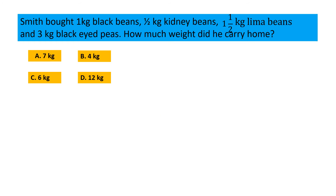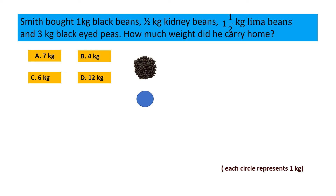Smith bought 1 kg black beans, half kg kidney beans, 1 and a half kg lima beans, and 3 kg black-eyed peas. How much weight did he carry home? Option A: 7 kg, Option B: 4 kg, Option C: 6 kg, Option D: 12 kg. For better understanding, let's assume one circle is 1 kg. We will make one circle for 1 kg black beans, and for 1 and a half kg kidney beans we will make one full circle and a half circle.